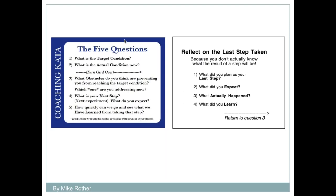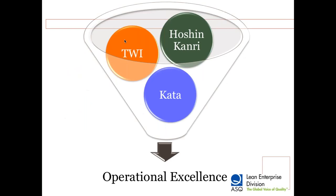You can see that it's a very simple process — the improvement kata only has four steps, and the coaching kata walks them through those steps. They continue on and on until each target condition is reached, and as each target condition is reached, the challenges that are set to help the organization reach their goals are also met. I just went through some very brief, very high-level definitions of what Hoshin Kanri, TWI, and Kata are. Lots more information available — you're welcome to reach out to me as well.